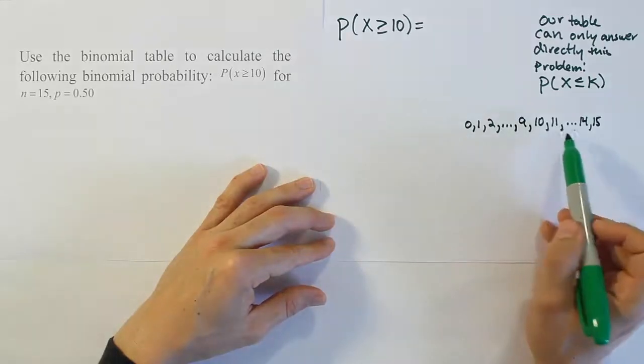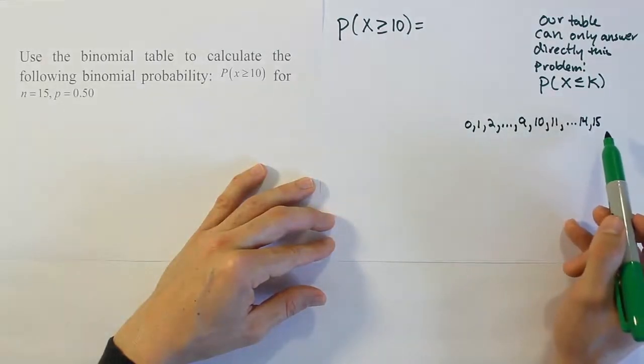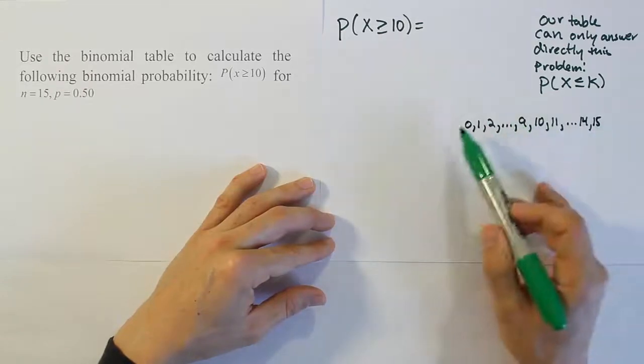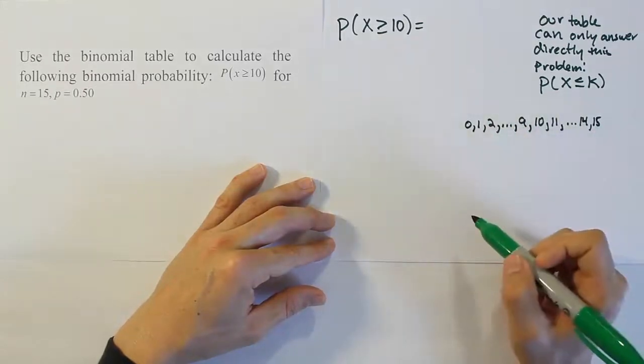Dot dot dot, 9, 10, or 11 successes, all the way up to 15 successes. And the total probability for all of this is 100%, right? The total sum is 100%.